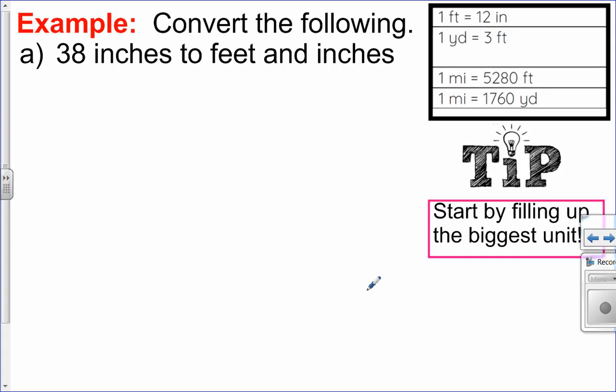Okay, let's try one where we're filling up multiple categories. For example, here 38 inches, I want to convert that to feet and inches. So firstly, I know that one foot is the same as 12 inches. So I want to see how many inches I want to fill it up all the way as full as I can. So 38 inches is equal to how many feet and how many inches left over.